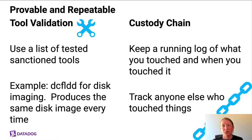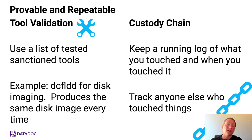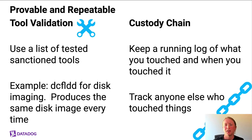We can prove beyond the shadow of a doubt that we haven't futzed with the evidence we have available. The chain of custody is a complete record of who checked out what piece of evidence, who may have modified it, so that we can go back and see the complete log of what happened over the course of an investigation. This has gotten a tiny bit easier with cloud provider control plane logs like AWS CloudTrail.